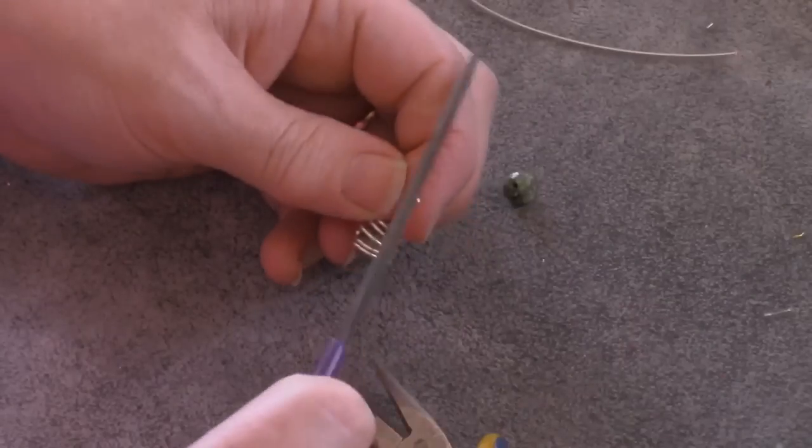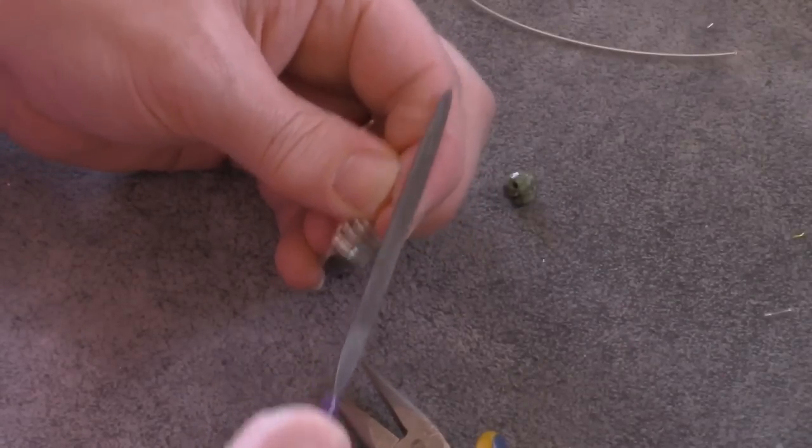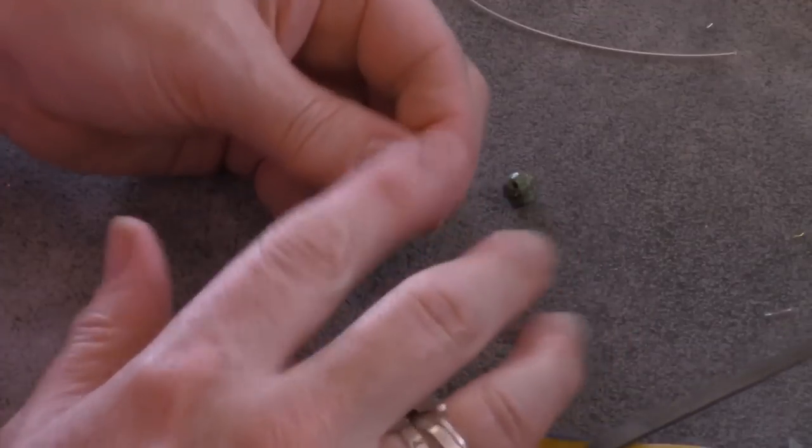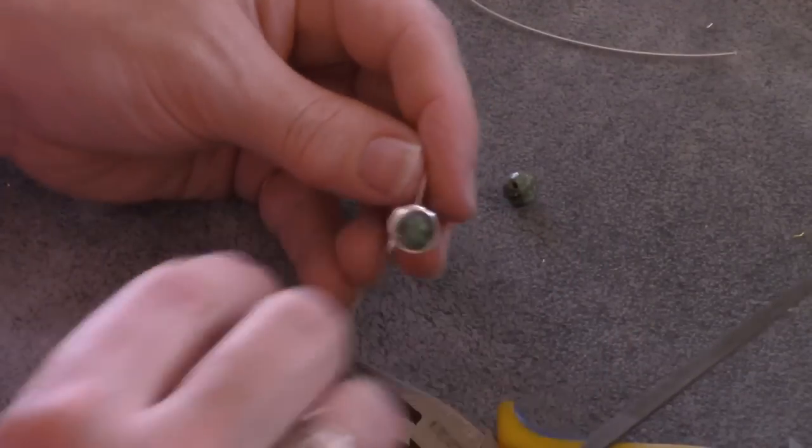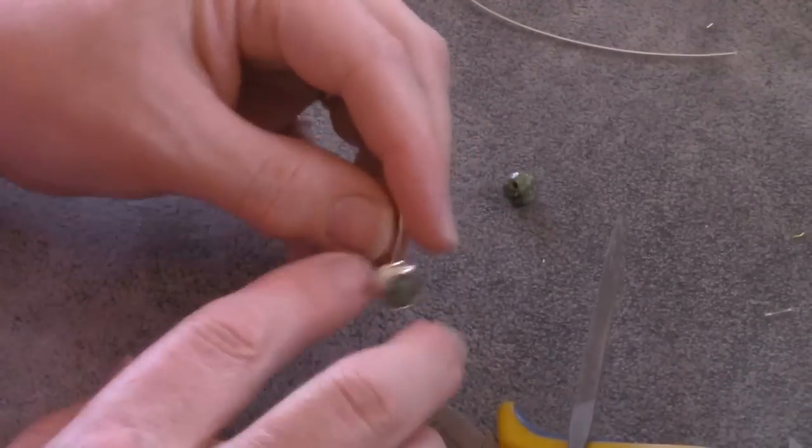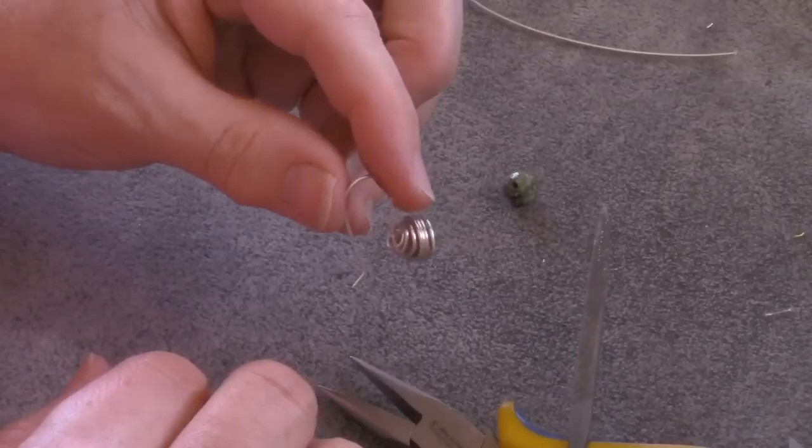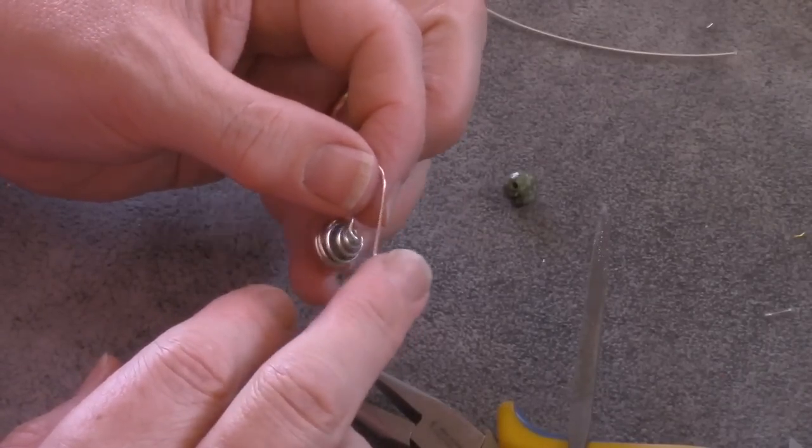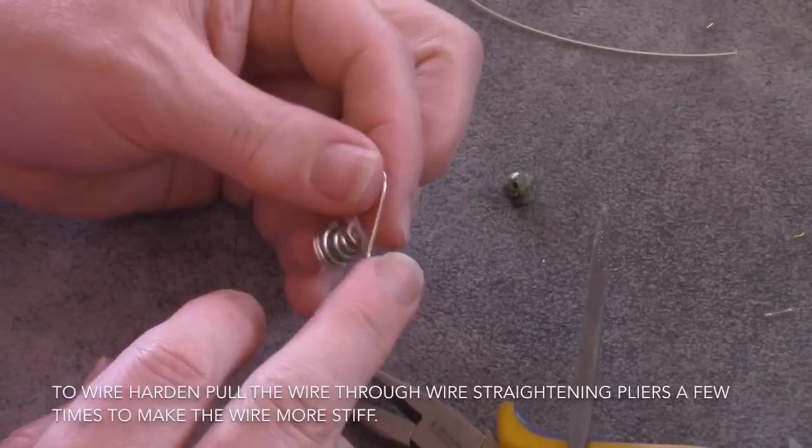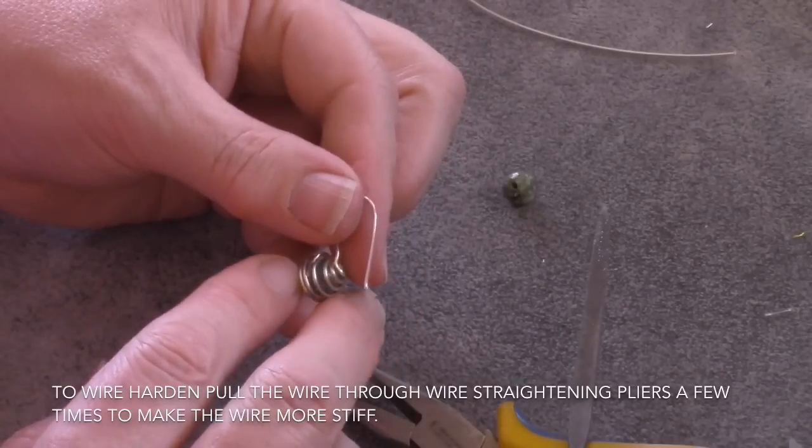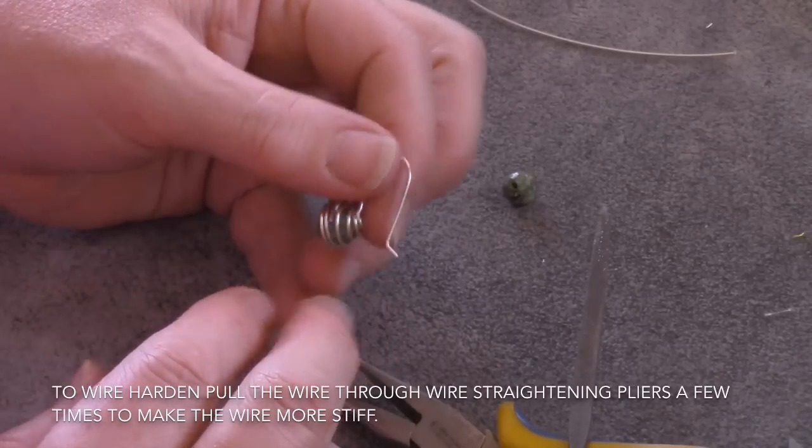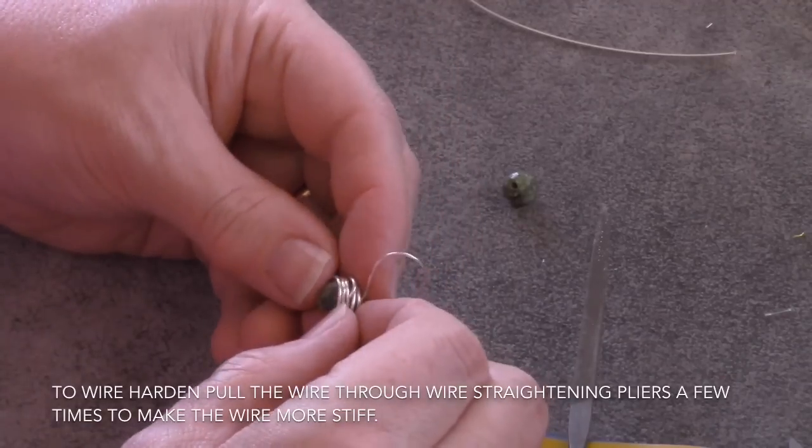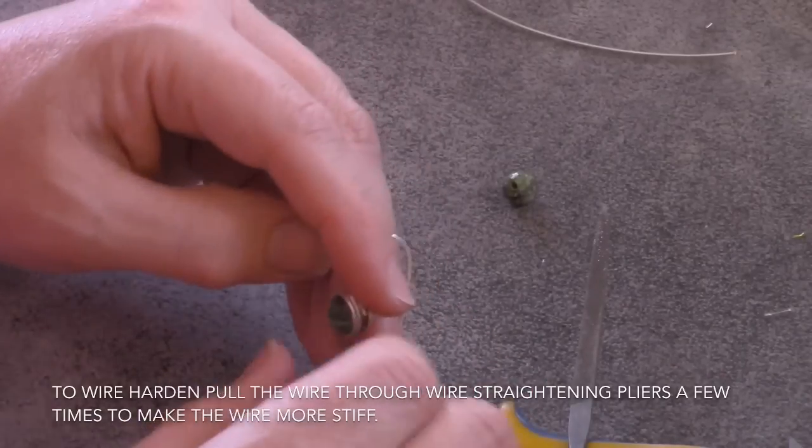This is what you would have. Make sure that you finish the end. You just would take a jewelry file or a metal nail file and file that until it's not sharp anymore, otherwise it might cut your ear. So that would be your completed earring. Now you want to make sure that you're working with a wire that's a bit stiff. A dead soft wire is too soft so you want to make sure that maybe you could use your wire straightening pliers or use a half hard wire to make this earring.